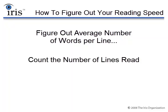we'll count the number of lines that we just read in that one minute, and then we'll multiply the number of lines we read by the average number of words per line.